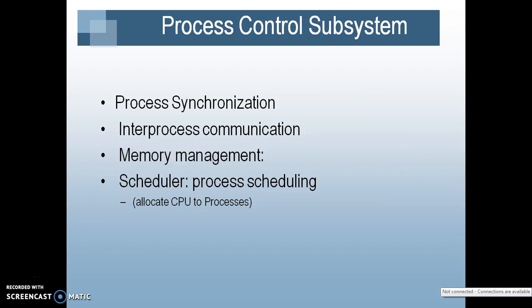Another major building block of kernel is the process control subsystem. The function of process control subsystem is managing the various processes in the system, process synchronization, the communication of processes as inter-process communication, managing the memory requirements of the process as memory management, and scheduling the processes — that is, allocating the CPU to the processor.